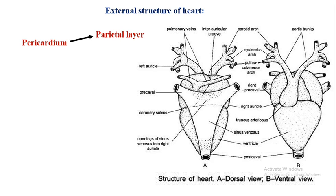The inner layer is called the visceral pericardium. The space between these two layers — the parietal pericardium and visceral pericardium — is called the pericardial cavity. This pericardial cavity is filled with pericardial fluid, which acts as a shock absorber and protects the heart from external shocks.